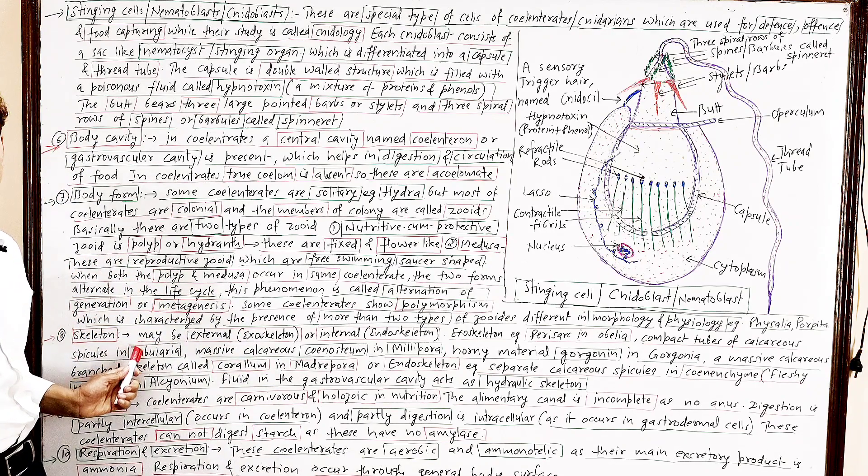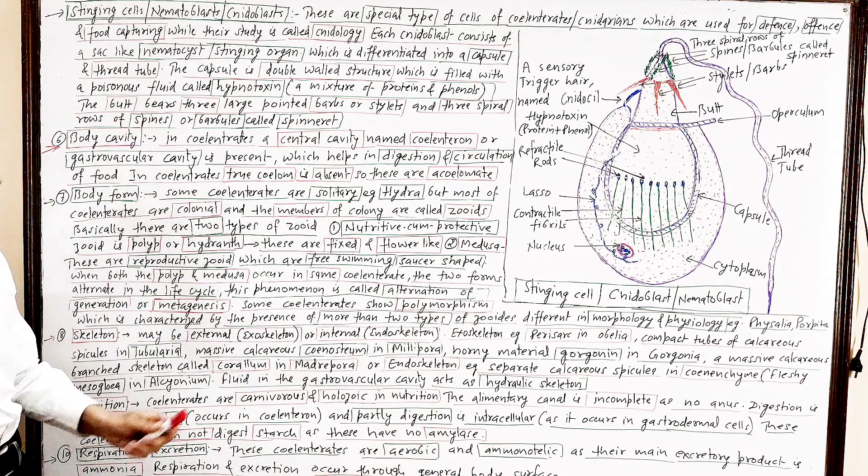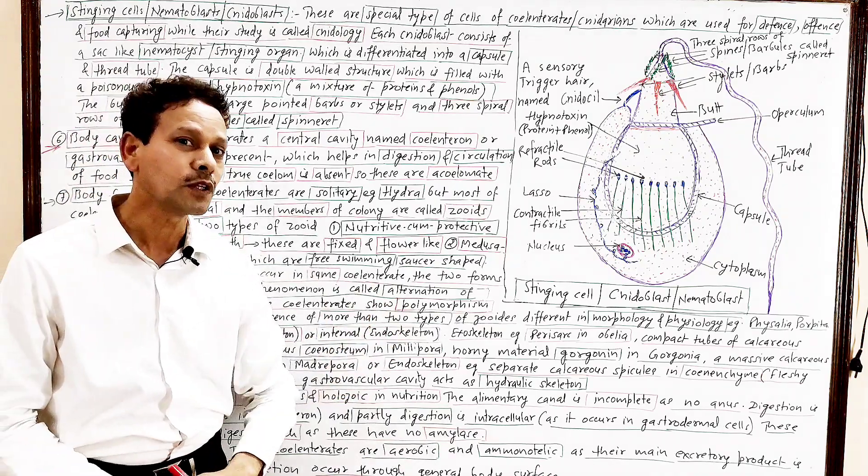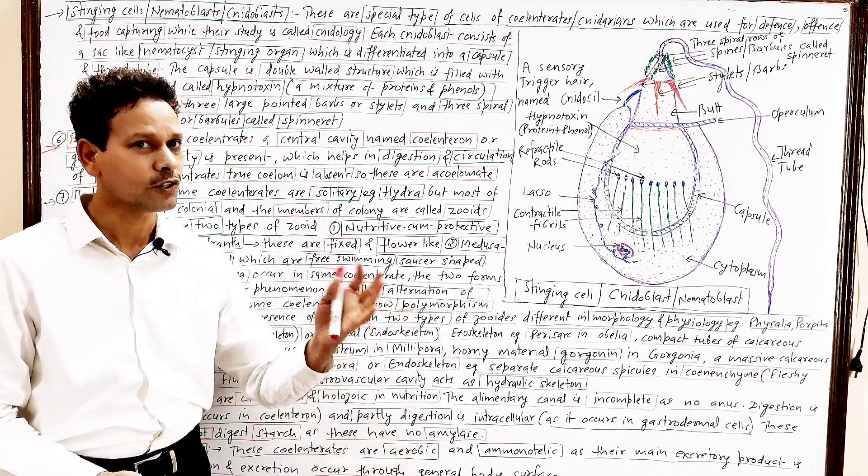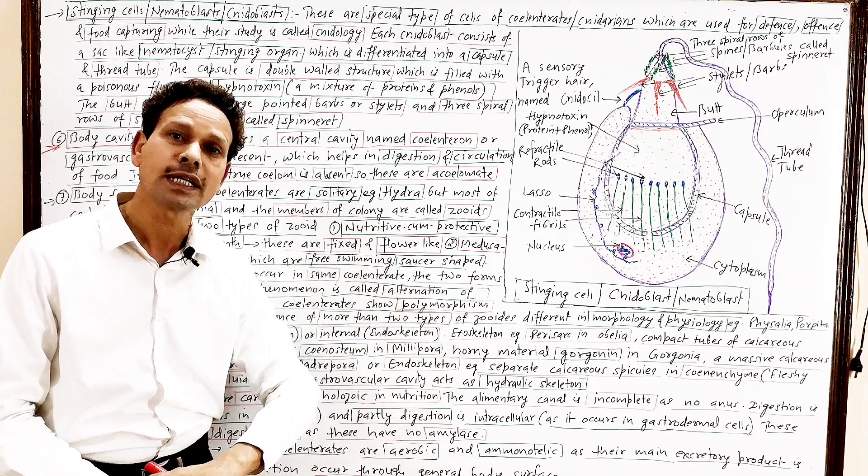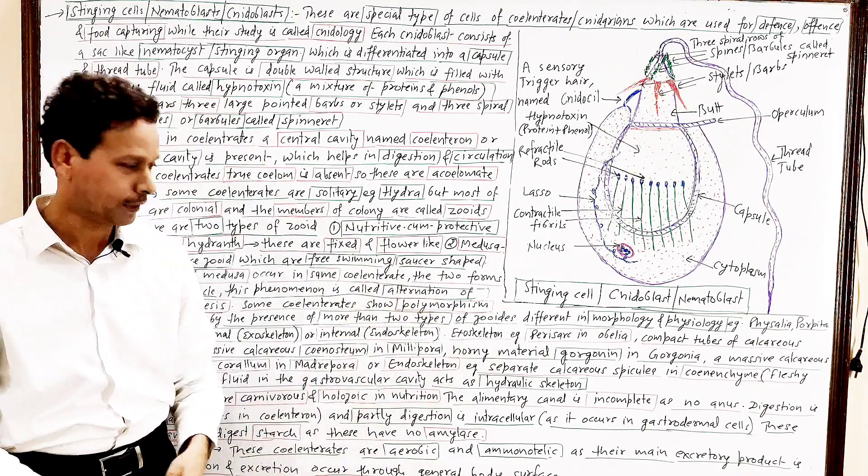Next property is skeleton. In this phylum, it is both types of skeleton. Exoskeleton as well as endoskeleton. Both types of skeleton well developed.